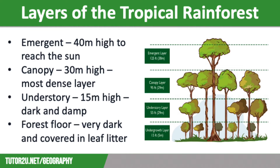There are four distinctive layers in the tropical rainforest. Right at the top we have the emergent layer. These are the tallest trees in the rainforest with some over 50 metres in height. The trees have grown tall here to reach the sun and are home to species of birds such as parrots and toucans along with many bats.